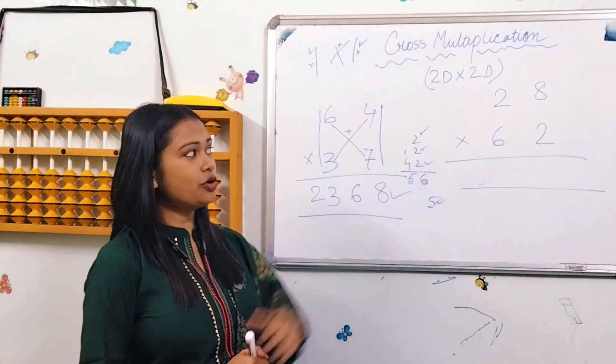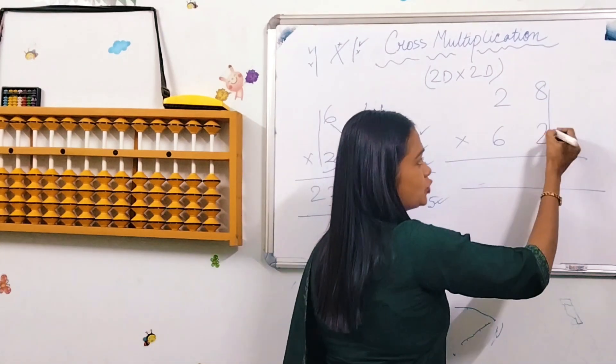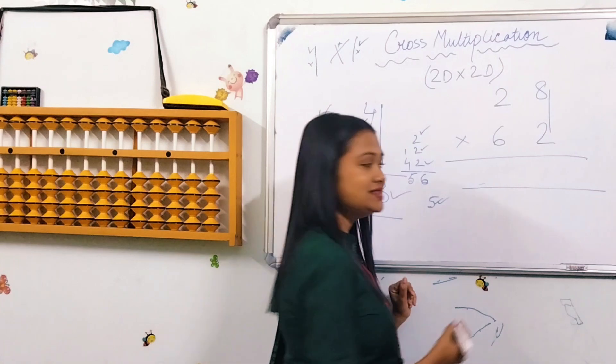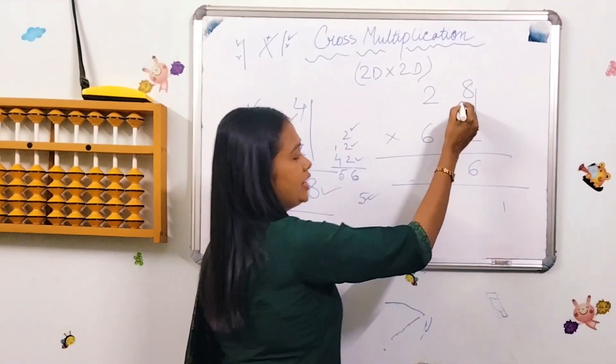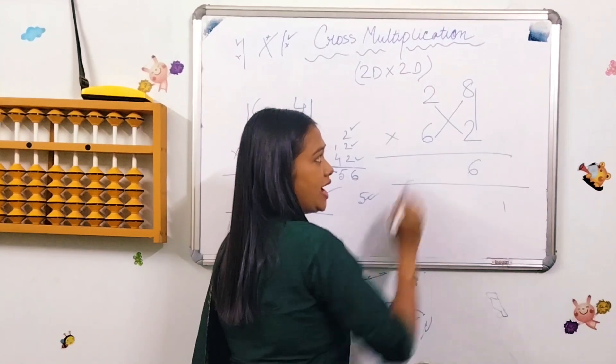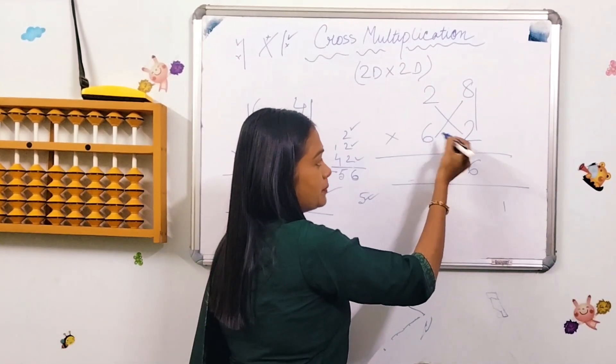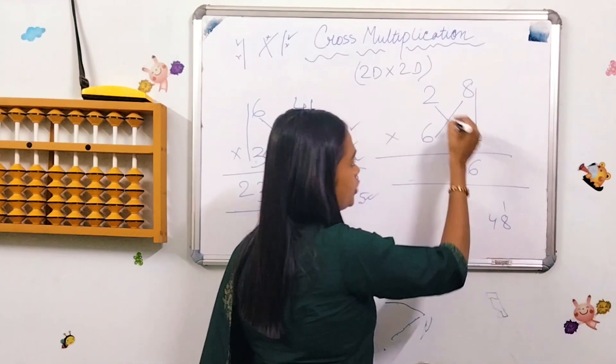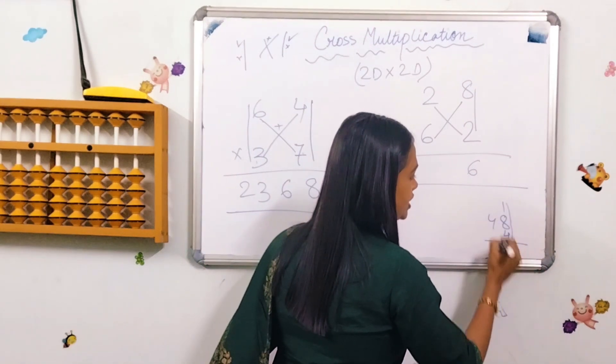Next, let's see what we have done here. First, 8 into 2 is 16, write 6, carry 1. Then we have the cross multiplication: 6 into 8 is 48, and 2 into 2 is 4. So 48 plus 4 is 52, plus carry 1 is 53. Write 3, carry 5.